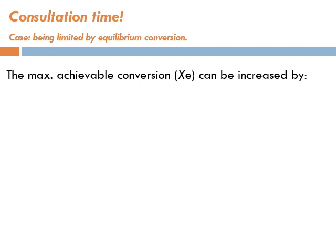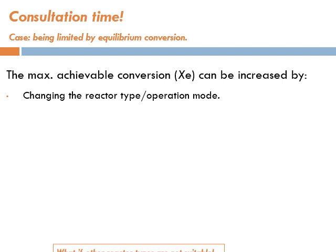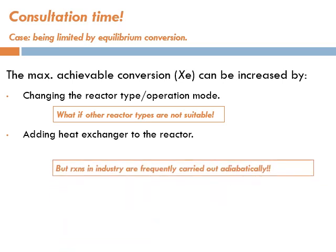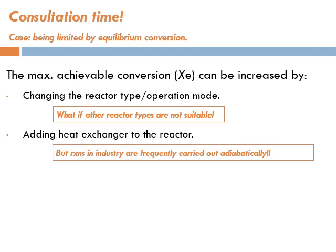The maximum achievable conversion can be increased by changing the reactor type or operating mode. But what if other reactor types are not suitable — for example, if A and B have the same boiling point or nearly the same molecular sizes? Then neither reactive distillation nor a membrane reactor would be helpful. So let's explore the second option: adding a heat exchanger to the reactor.